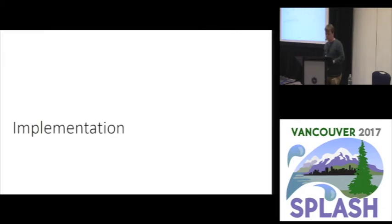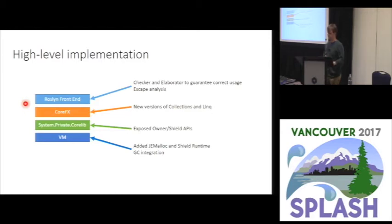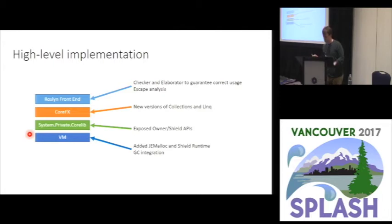I'll cover some implementation briefly. We had to do work across pretty much the whole stack: a C# front end modified to guarantee shields are used correctly; libraries — system LINQ, collections, etc. — modified; a thin shim on the runtime to expose owners and shields; and in the VM, we integrated with the GC to allow pointers in all directions, added a memory manager, and the shield runtime.